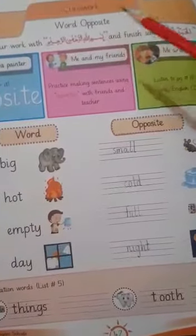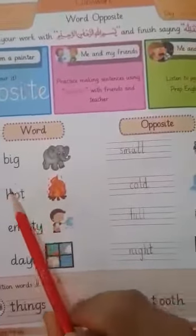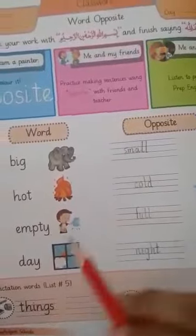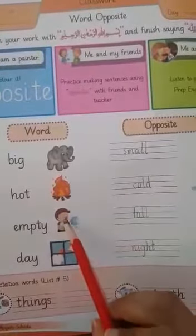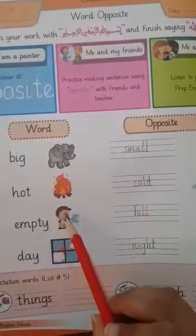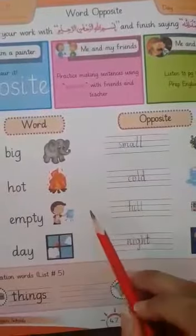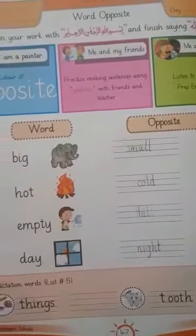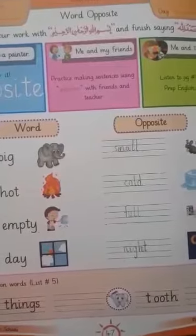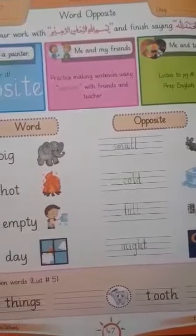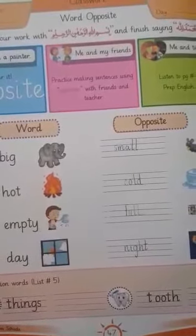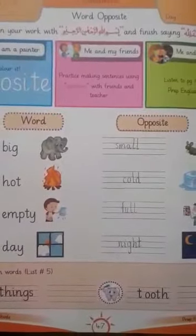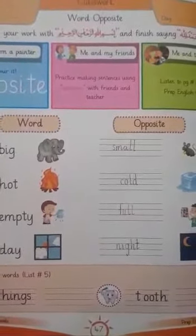Opposite words means ek word uska ulta. If I say white is a word, so black is its opposite word — uska ulta kya hoga? Black. If I say tall, tall is a word — lamba — so its opposite word is short, chhota.